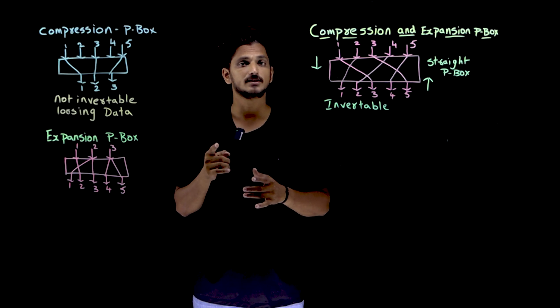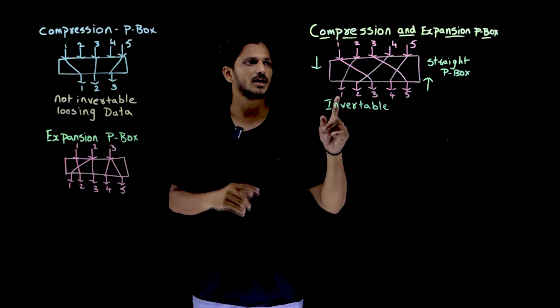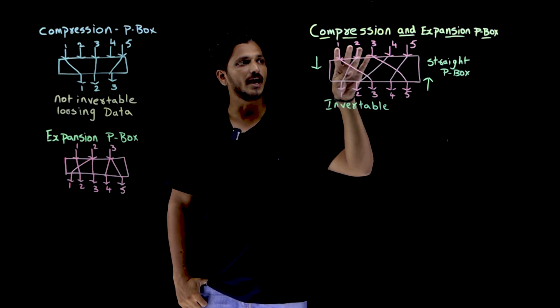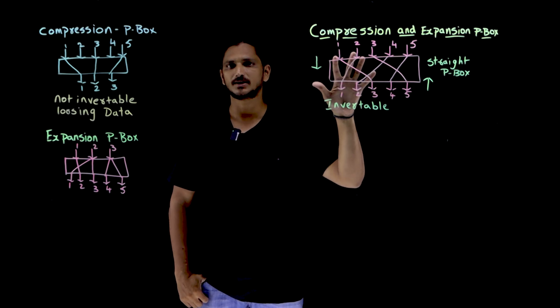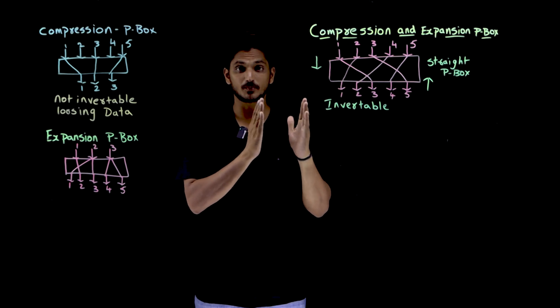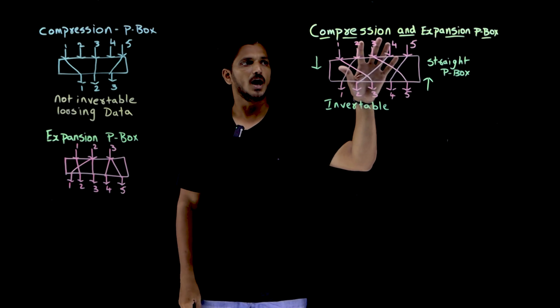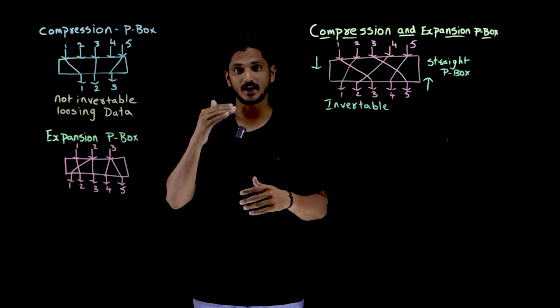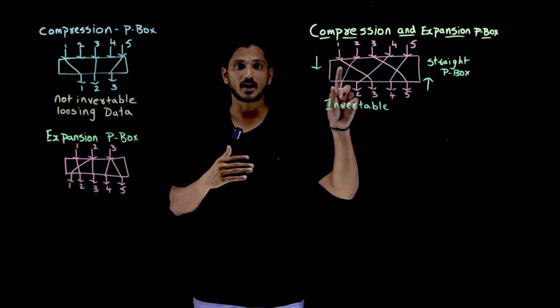In our last class we clearly discussed Stripe P-Box. Let us refresh it once. Stripe P-Box means if you are having n input bits, here in our example we are having 5 input bits. These 5 input bits are converted, we are permuting the bits, means we are changing the position of the bits and the output is also containing 5. If you are having n input bits, you are having n output bits in our Stripe P-Box.